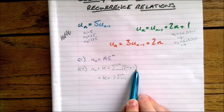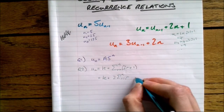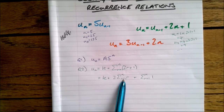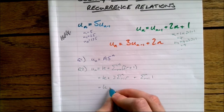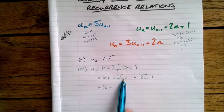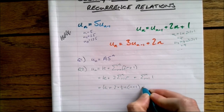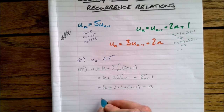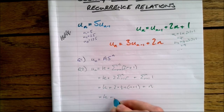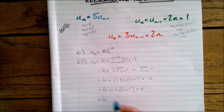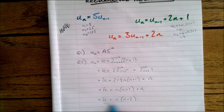Now let's evaluate this sum so we don't have to write it as a sum anymore — using skills from the series chapter. We can break up the sum: summing 1 from r equals 1 to n is just n, and the formula for the sum of r from 1 to n is half·n·(n+1). So we get 2 times half·n·(n+1) plus n, which simplifies to n(n+1) plus n. Factorising, we get n(n+2). So the solution neatens up nicely.